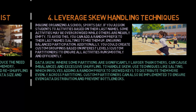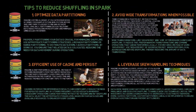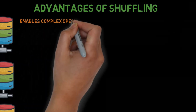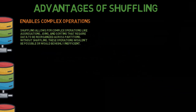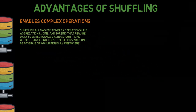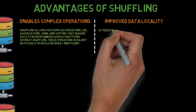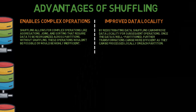By implementing these tips, you can reduce the amount of shuffling required in your Spark jobs, leading to improved performance and more efficient resource utilization. On the advantages side, shuffling enables complex operations like aggregations, joins, and sorting that require data to be reorganized across partitions — without shuffling, these operations wouldn't be possible or would be highly inefficient. Shuffling can also improve data locality for subsequent operations; once the data is well partitioned, further transformations can be processed more efficiently on each partition.